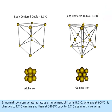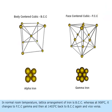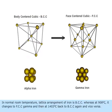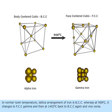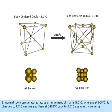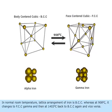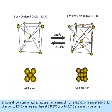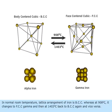In normal room temperature, lattice arrangement of iron is BCC, whereas at 908 degrees centigrade it changes to FCC gamma, and then at 1403 degrees centigrade back to BCC again, and vice versa.